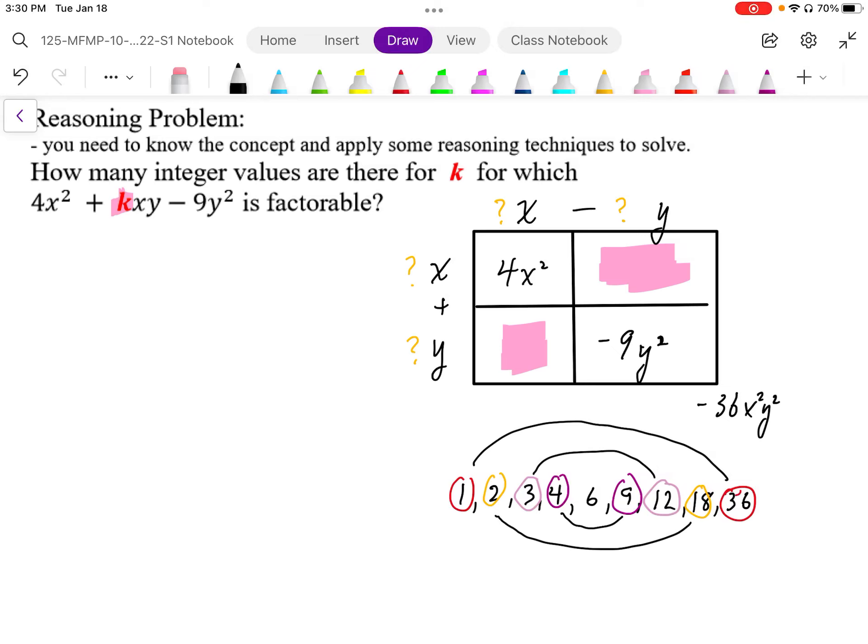So now using these pairs, as we pair them up, we can get the different k values.